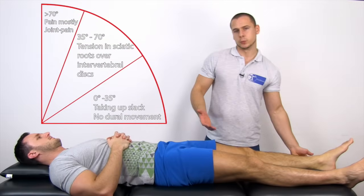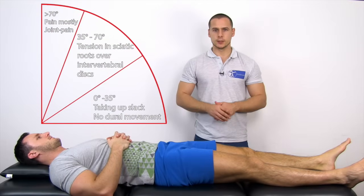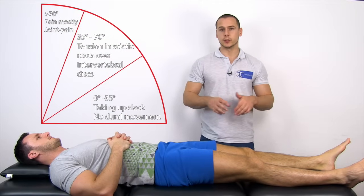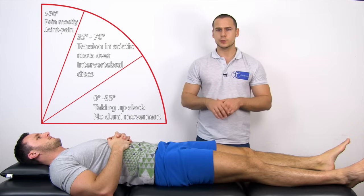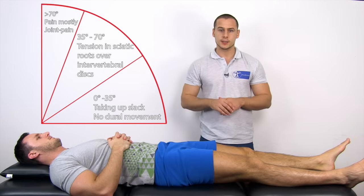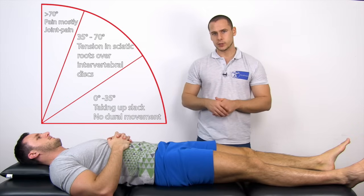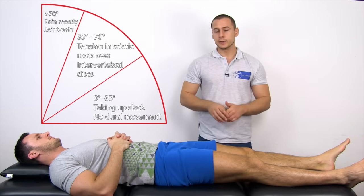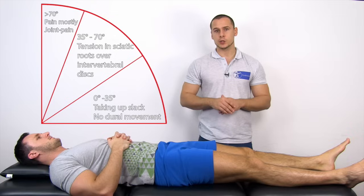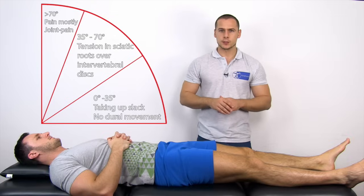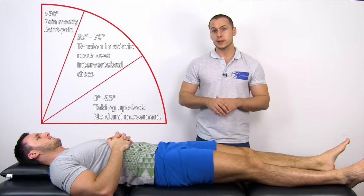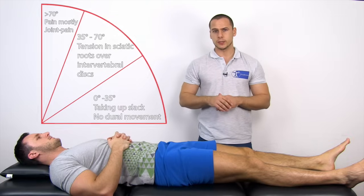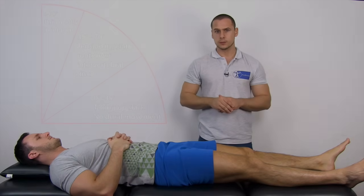Normally you would expect radiculopathy symptoms to occur in the range between 35 to 70 degrees of hip flexion. If pain is elicited past this range, this pain is mostly coming from the lumbar spine or the sacroiliac joint.